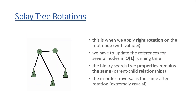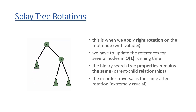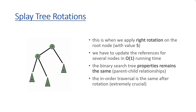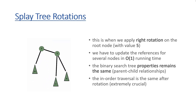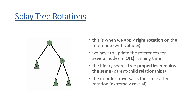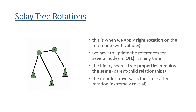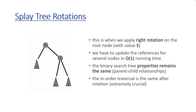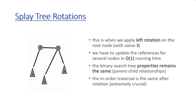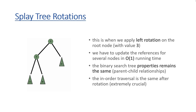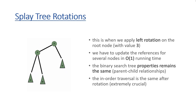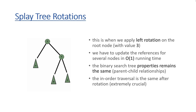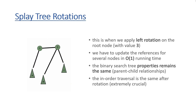We are going to use right rotation exactly as we have seen with AVL trees and red-black trees. The running time complexity of a right rotation is O(1) constant, because we just have to update the references. It is extremely crucial that the binary search tree properties are not going to change as far as parent-child relationships and in-order traversal are concerned. The left rotation is very similar — it is the opposite in the sense that we make a rotation from right to left — but the running time complexity is still O(1), and the binary search tree properties do not change.